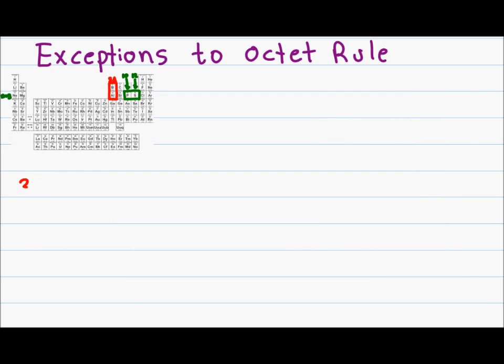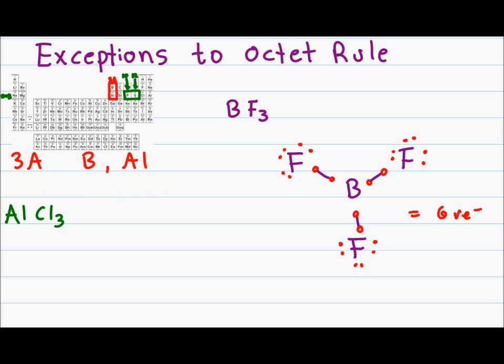The two atoms in group 3A were boron and aluminum. Let's look at BF3. We have a boron in the center surrounded by three fluorines. Boron initially has just three valence electrons, and fluorine provides another three for a total of six valence electrons.